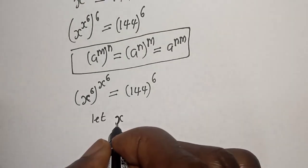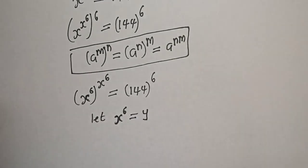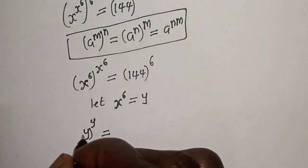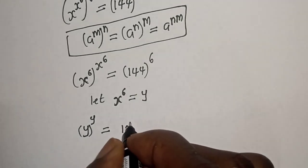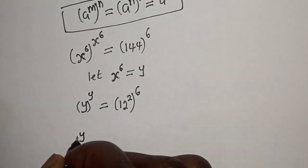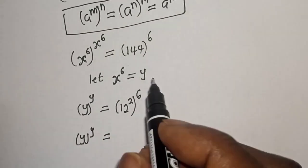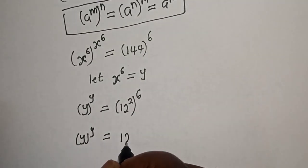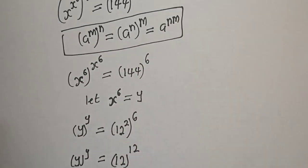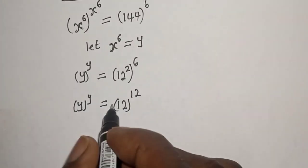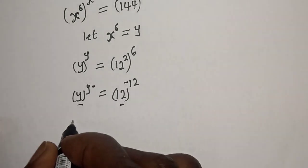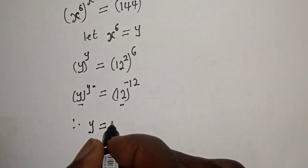Let s raised to power 6 equal y. Then y raised to power y is equal to 144, which can be written as 12 squared to the power of 6. So y raised to power y is equal to 12 raised to power 12. If you look at this, the base is equal to 12 and the exponent is equal to 12. Therefore, y is equal to 12.